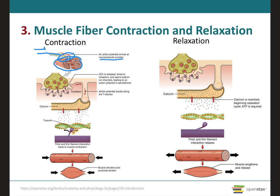There is an action potential coming down this axon, and when it reaches the motor unit, the first thing that happens is that when the action potential arrives at this synaptic end bulb, it causes calcium to enter. The entry of calcium triggers these synaptic vesicles containing the neurotransmitter to be pushed down, and the membrane of these synaptic vesicles fuses with the membrane of the terminal end button, releasing the neurotransmitters inside.